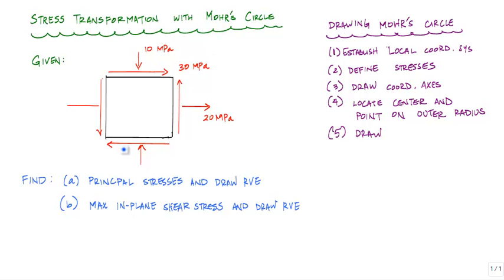We're given the state of stress here with values of normal stress of 20 megapascals and 10 megapascals and a shear stress of 30 megapascals. What we want to find are the principal stresses and draw the representative volume element in its principal stress state, and also the maximum in-plane shear stress and draw that representative volume element in the maximum in-plane shear stress state.